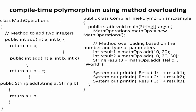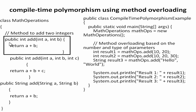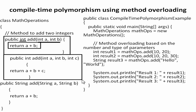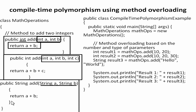Compile-time polymorphism using overloading: consider a MathOperations class. We have 'public int add(A, B)' which adds two integers A and B. We also have 'public int add(A, B, C)' — it has three parameters and returns A plus B plus C. Additionally, 'public String add(String A, String B)' takes two string parameters and returns the concatenation of A plus B.